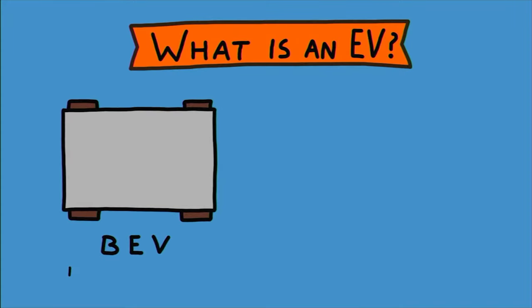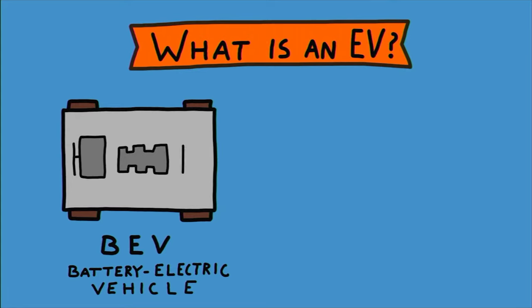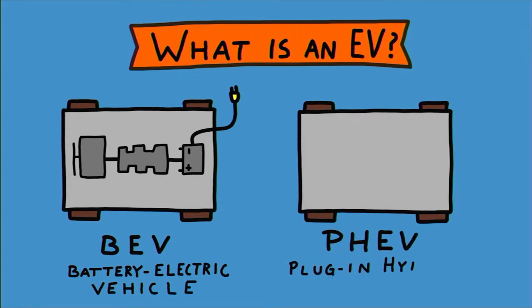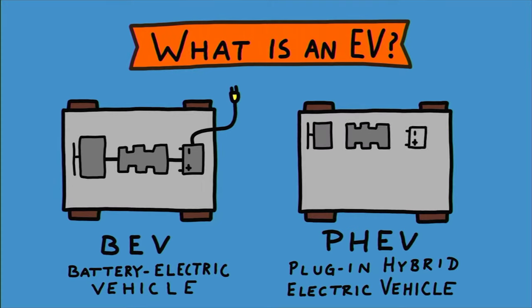There are two types of electric vehicles. Battery electric vehicles are powered solely by an electric motor with rechargeable batteries. Plug-in hybrid electric vehicles are powered by a combination of a gasoline engine and an electric motor with rechargeable batteries.